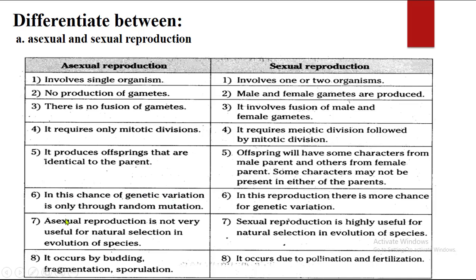In asexual reproduction, genetic variation occurs only through random mutation — a sudden change in the gene sequence. In sexual reproduction, there is more chance of genetic variation. Asexual reproduction is not very useful for natural selection and evolution of species, since the offspring are similar and cannot lead to evolution. However, sexual reproduction is highly useful for natural selection and evolution. Asexual reproduction occurs by budding, fragmentation, sporulation, and other methods. Sexual reproduction occurs due to pollination and fertilization in plants, and in animals it involves either internal or external fertilization.